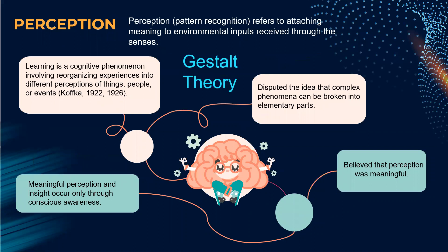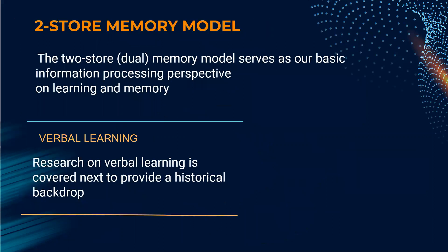Perception, or pattern recognition, refers to attaching meaning. According to Gestalt theory, learning is a cognitive phenomenon involving reorganizing experiences into different perceptions of things, people, or events. Meaningful perceptions and insight occur only through conscious awareness. Gestalt theorists also disputed the idea that complex phenomena can be broken into elementary parts, and believed that perception was meaningful.